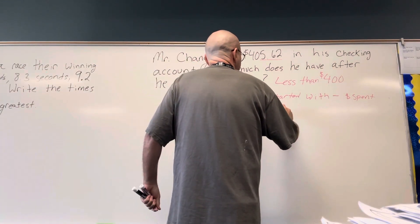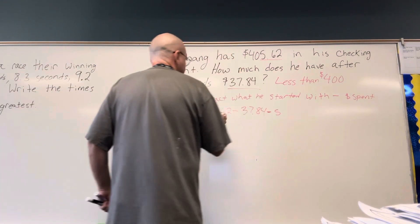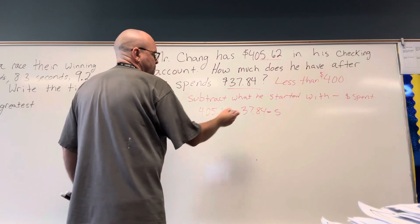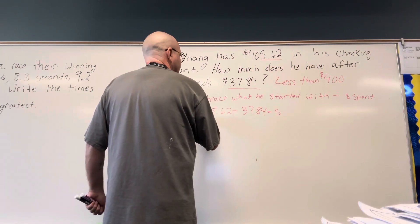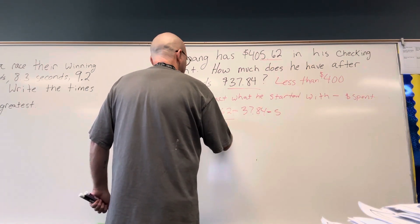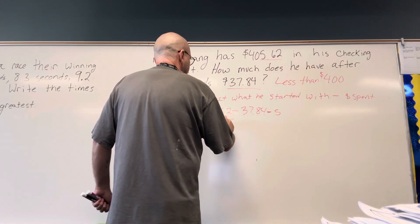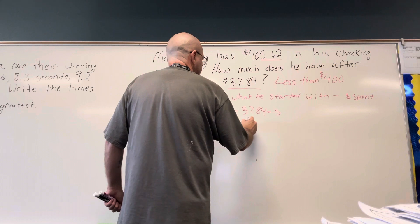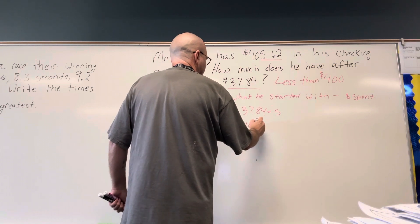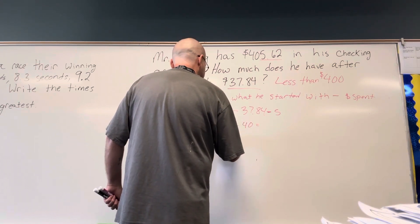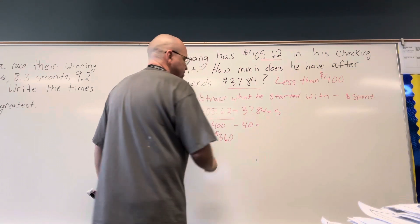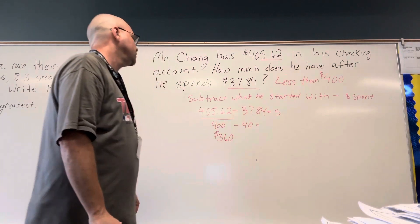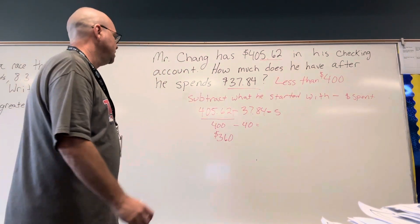Equals the money he has. If I made it $400 minus $40, it would be $360. So my answer should be somewhere near $360.